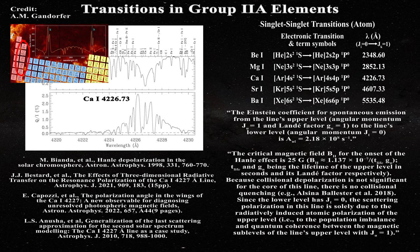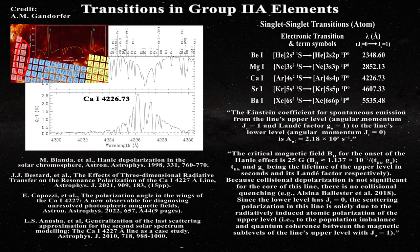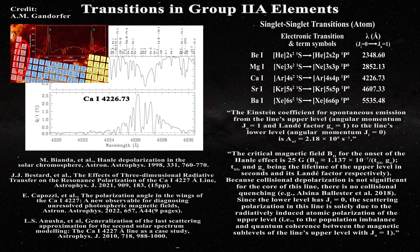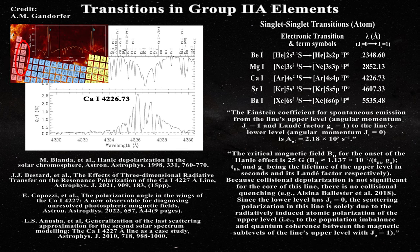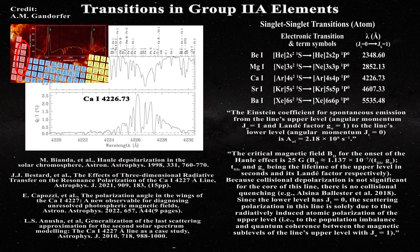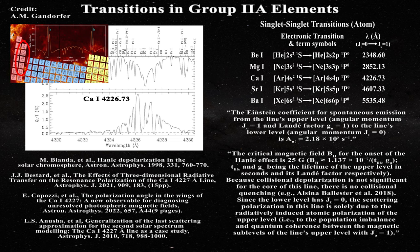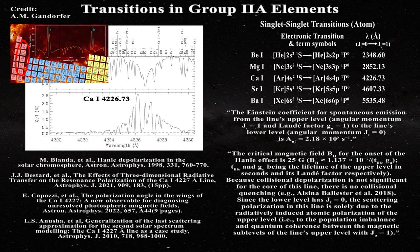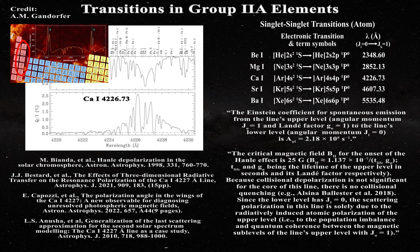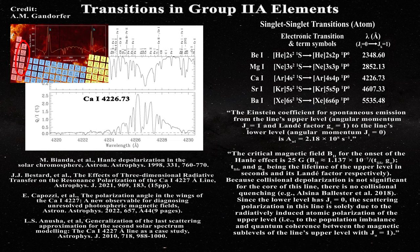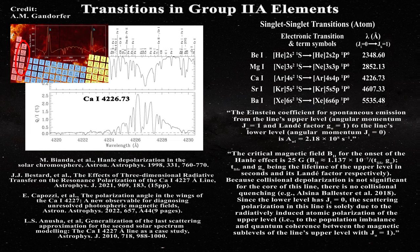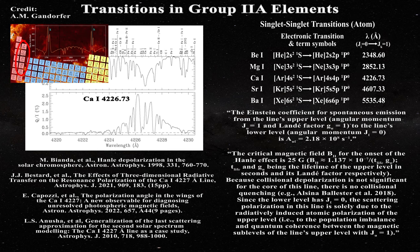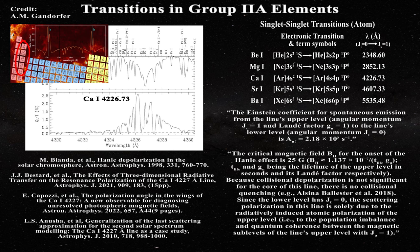Of course, such an Einstein coefficient must be determined in a laboratory setting where there are no interatomic interactions. They continue: The critical magnetic field B sub H for the onset of the Hanley effect is 25 Gauss. B sub H approximately 1.137 times 10 to the minus 7 divided by T life GU. T life and GU being the lifetime of the upper level in seconds and its Landay factor respectively. Because collisional depolarization is not significant for the core of this line, there is no collisional quenching. Since the lower level has J sub L equals 0, the scattering polarization in this line is solely due to the radiatively induced atomic polarization of the upper level. That is, to the population imbalances and the quantum coherence between the magnetic sub levels of the line's upper level with J sub U equal 1.